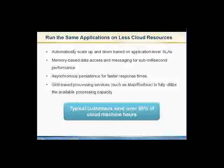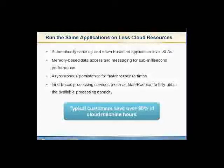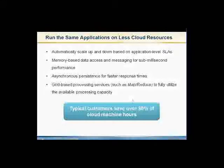The integration between GigaSpaces and GoGrid takes advantage of the dynamic capabilities of both platforms, using only the resources needed to support the SLAs of the application. GigaSpaces' ability to take advantage of memory and co-locate business logic with data access makes it very efficient to leverage all resources provisioned by the GoGrid infrastructure. We've seen that in many cases this combination saves up to, or even over, 80% of the needed cloud machines and hours.